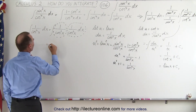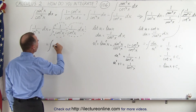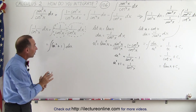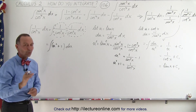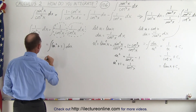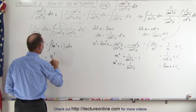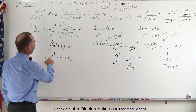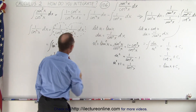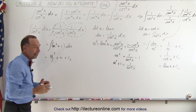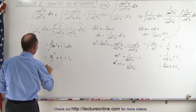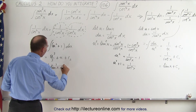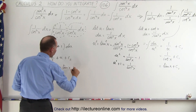So now what we have becomes the integral of u squared plus 1 times du. Something that looked really hard, through an interesting trick, converts to something really easy to integrate. This becomes equal to u cubed over 3 plus u plus a constant of integration c2. Now all we have to do is replace u with what it equals: this becomes 1 third times tangent cubed of x plus tangent of x plus a constant of integration.